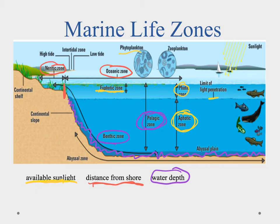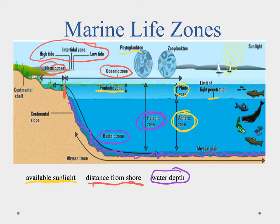Right up on the shoreline is what we call the intertidal zone — the distance between high tide and low tide. If you're walking at the beach, the first part you reach at high tide is part of the intertidal zone. Below the low tide mark, you'd enter the neritic zone because there's always water there. Continuing to walk until you reached the edge of the continental shelf, you'd find yourself in the oceanic zone. By joining these classifications together, we can be more precise — for example, talking about the euphotic neritic zone, or an oceanic aphotic pelagic zone.